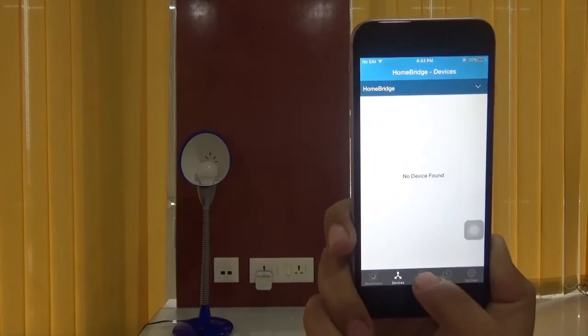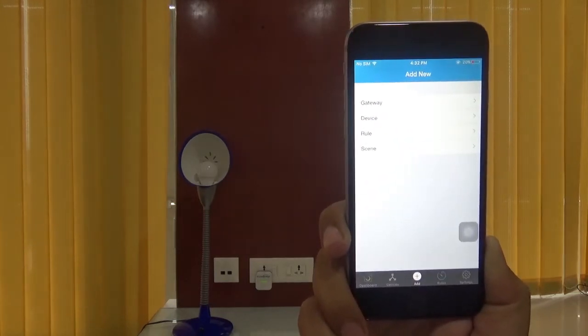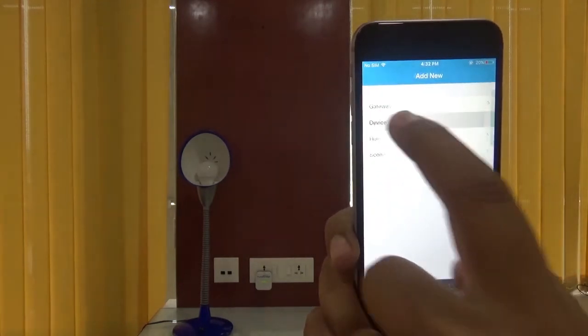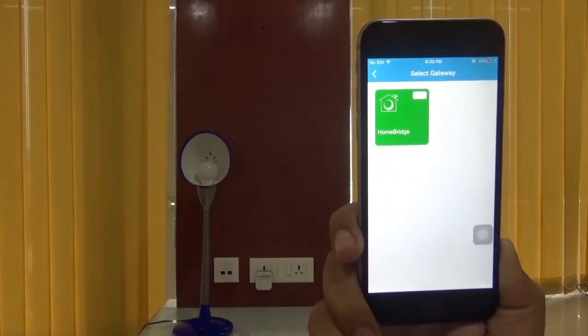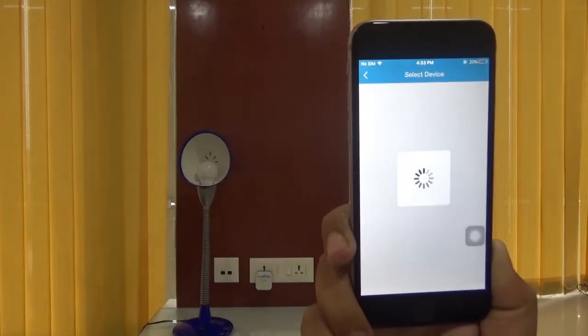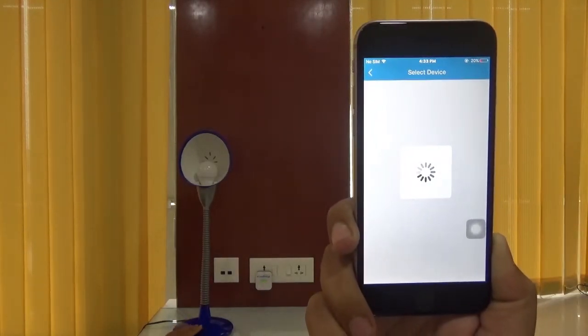Going forward, as we want a light bulb, let's tap on the add button and select device. Now tap on the gateway. You will see green light blinking here. It shows that the gateway is in discovery mode.